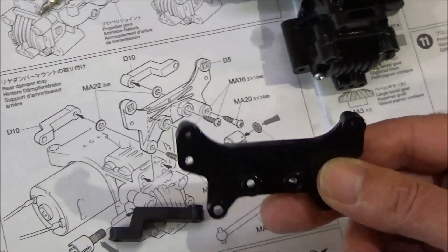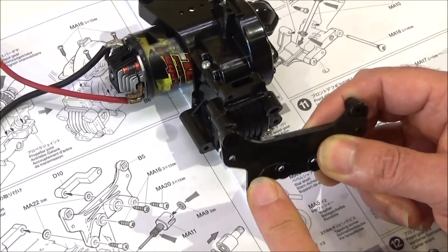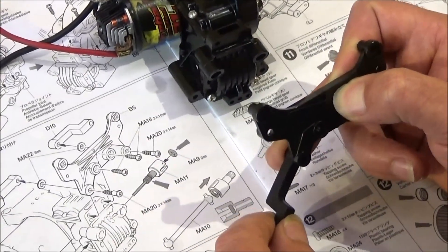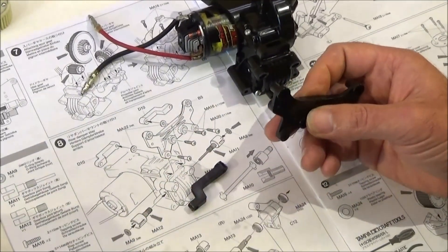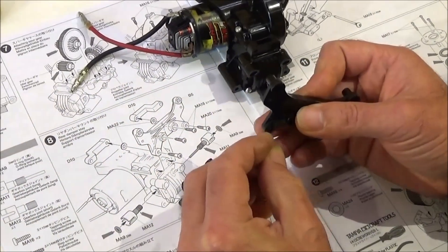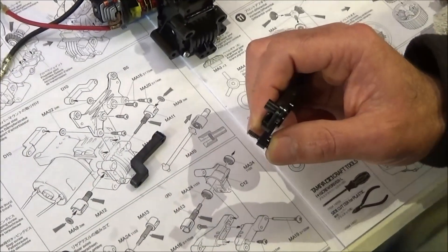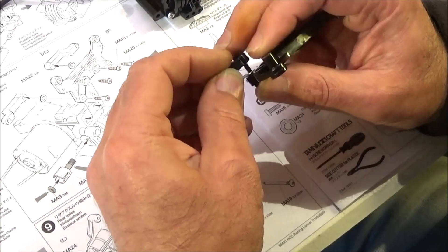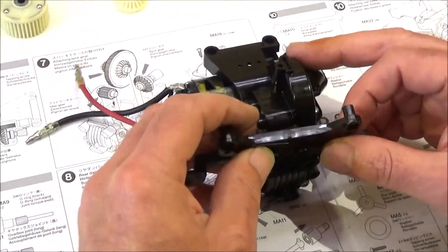Step eight is fitting the rear damper stay or shock tower as we might call it. It also holds the top two suspension arms, which are D10. And they go through with a step screw. Through that mount. The washer. And then screw straight into that there.